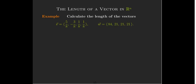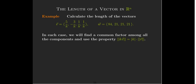So let's look at a couple of examples. Very simple formula, but let's see if we can take advantage of the properties to make the calculation simpler. So our vector V has components five-eighths, negative three-eighths, one-eighth, and one-eighth. And our vector W has components 84, 21, 21, 21. And we should see a pattern there. What we're going to do is find a common factor among all the components in each vector. And we'll factor that out and then use this property of lengths.